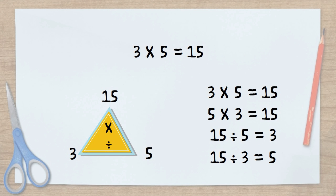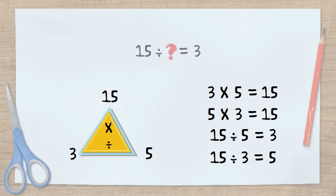So what happens if we come across a problem with an unknown factor? Well, we can look back at our fact family. In this situation, we know that 3 times 5 equals 15, or in this case, it would be 15 divided by 5 equals 3.